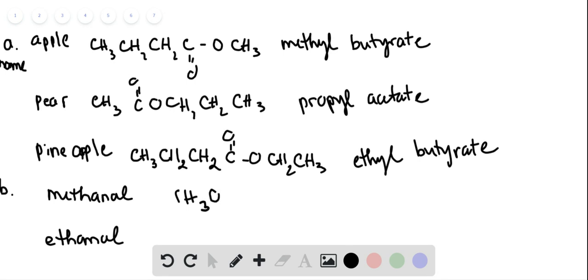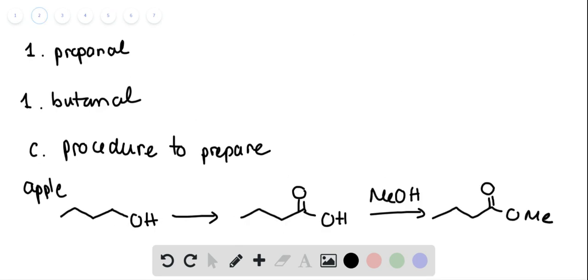B is to draw the structure of this compound. Methanol is CH3OH, ethanol is C2H5OH, 1-propanol is C3H7OH, and butanol is 4-carbon CH3CH2CH2CH2OH.